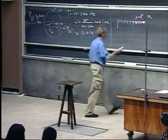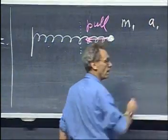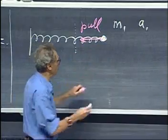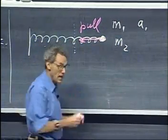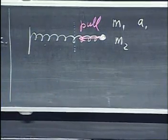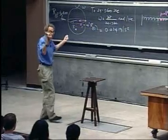So I measure an acceleration, a1. Now I replace this object by mass m2, but the extension is the same. So the pull must be the same. The spring doesn't know what the mass is at the other end, right? So the pull is the same.